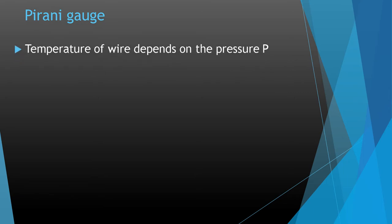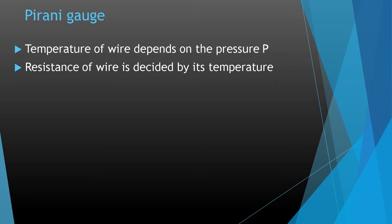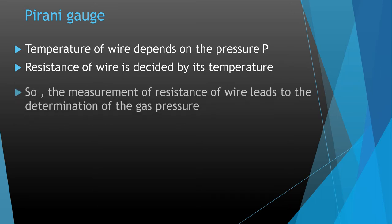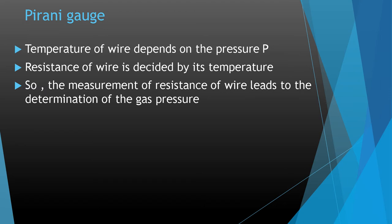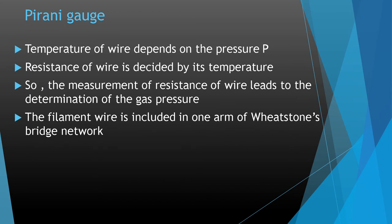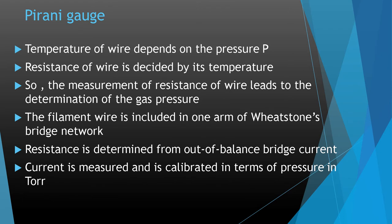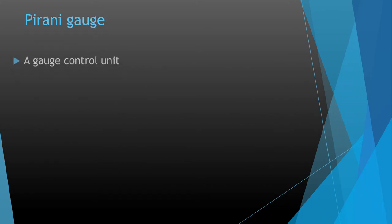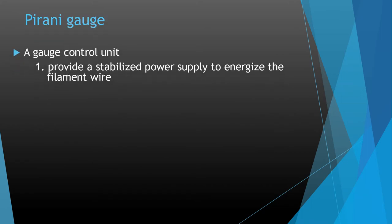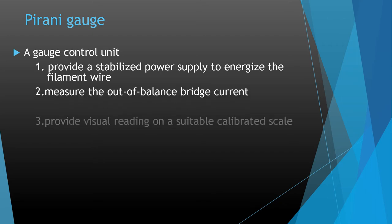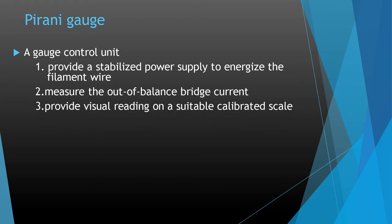In the Pirani gauge, the temperature of the wire depends on the pressure. The resistance of the wire is determined by its temperature, so measurement of the wire's resistance leads to determination of the gas pressure. The filament wire is included in one arm of a Wheatstone bridge network, and the resistance is determined from the out-of-balance bridge current. This current is measured and calibrated in terms of pressure in Torr. A gauge control unit provides a stabilized power supply to energize the filament wire, measures the out-of-balance bridge current, and provides a visual reading on a calibrated scale.